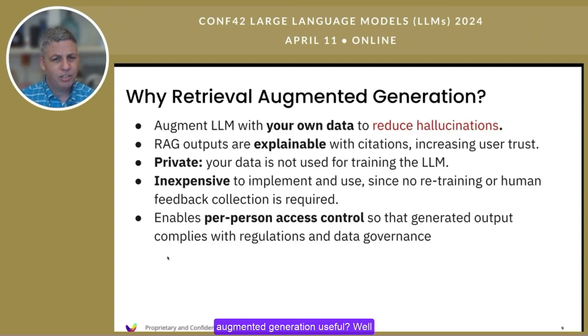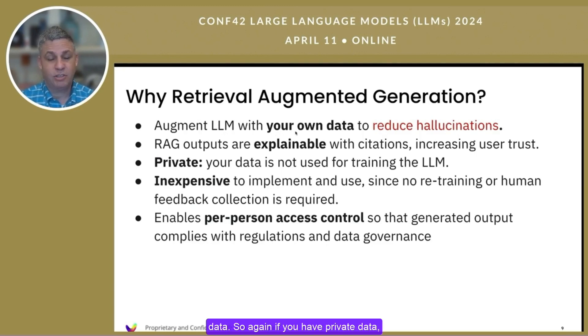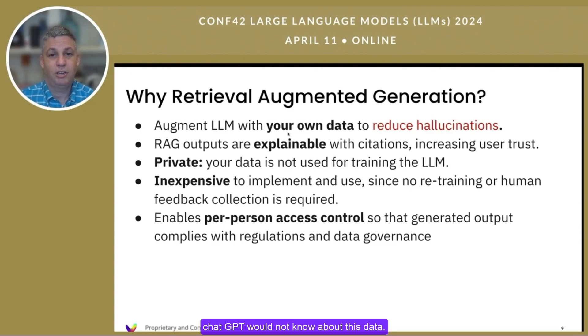Why is retrieval augmented generation useful? You augment the LM with your own data. If you have private data, which most enterprises do, GPT would not know about this data. So that's the main reason you start.